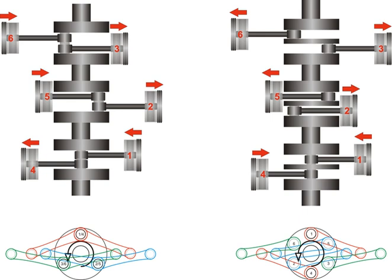True boxers have each crankpin controlling only one piston-cylinder while the 180 degrees engines, which superficially appear very similar, share crankpins.